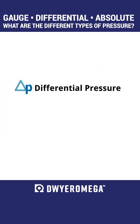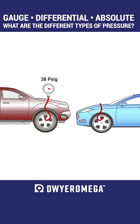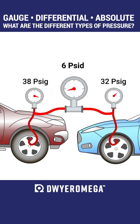Differential pressure is the pressure measurement between two pressure points. So let's say this truck tire pressure is 38 psig, and this car tire pressure is 32 psig. The pressure differential between these two would be 6 psig.